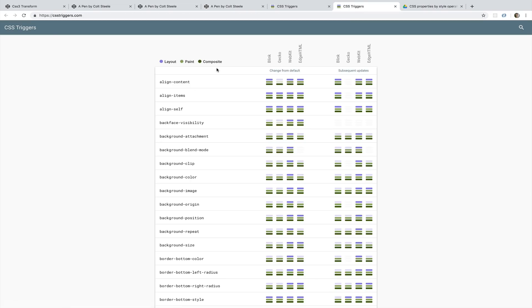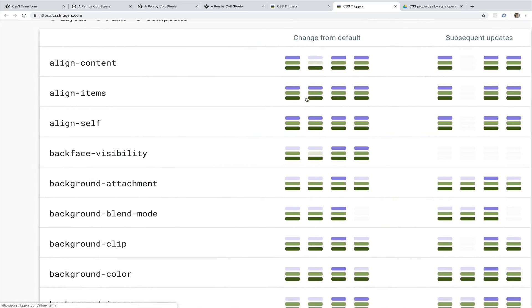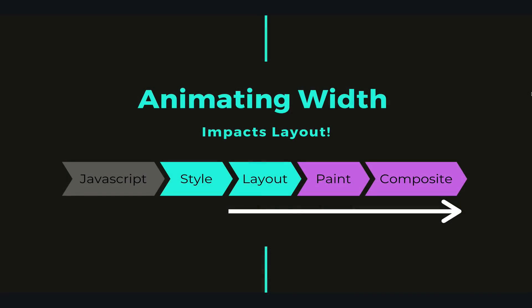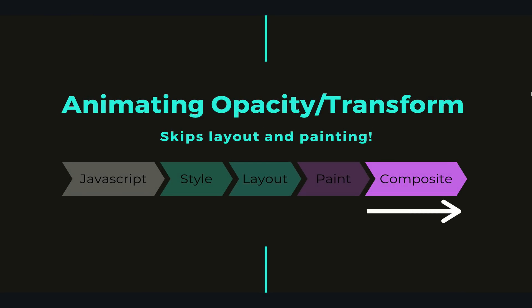There's another very popular website called CSS Triggers, and it shows the same information in a more exciting format — also breaking it down by different browser engine. Let's take something like width: if we animate the width of an element, we have to start all over again with layout, then repaint, then composite. Compare that to background color — layout is not impacted, but paint and composite are. And then finally, opacity and transform are two of the only properties that skip layout, skip painting, and work in composite layers — so they are much, much more efficient.